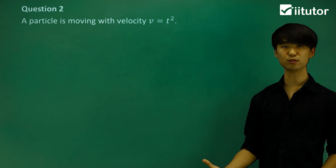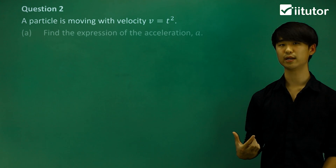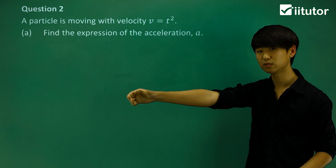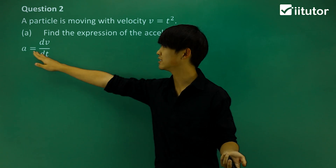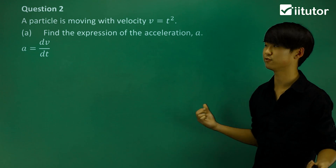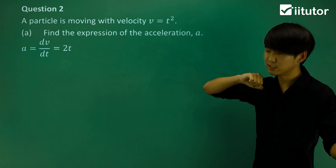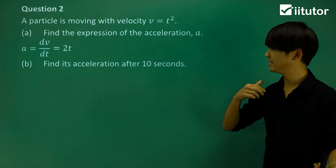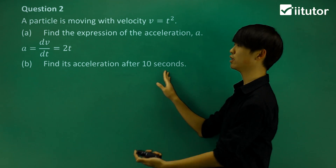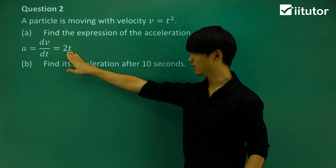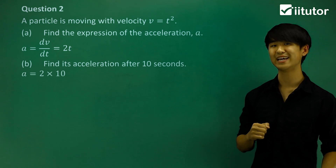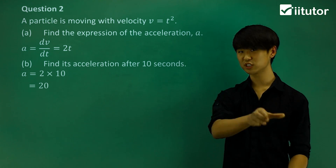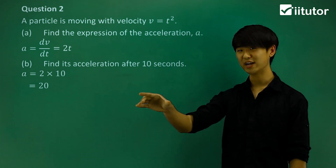In question 2, a particle moves with velocity v = t². To find acceleration, we differentiate velocity with respect to time: a = dv/dt = 2t. To find acceleration after 10 seconds, substitute t = 10: a = 2(10) = 20. So the key relationship is: differentiate velocity to get acceleration, integrate acceleration to get velocity.